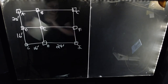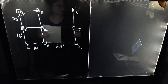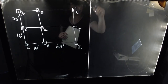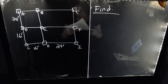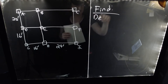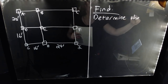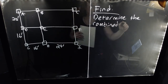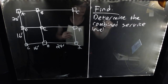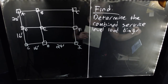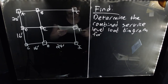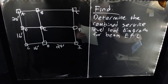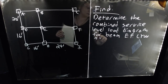We have our givens now. There are two things I'm going to be looking for. One: I want to determine the combined dead and live load diagram — the combined service level load diagram — for beam EF. On this one, you may neglect live load reduction if applicable for the beam, which we are going to do because figuring out the beam is complex enough.